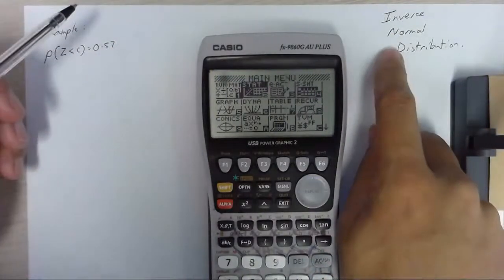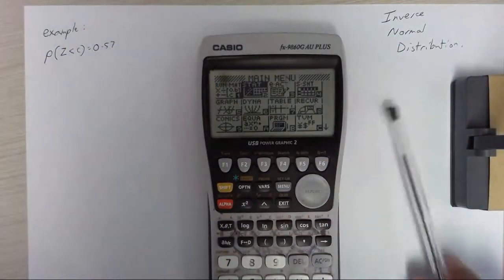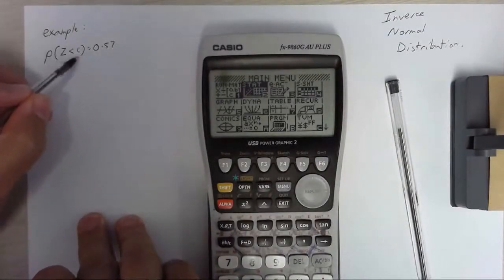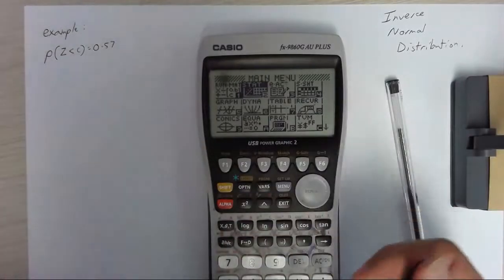What's about the inverse normal distribution? So basically it's where you know a probability but you don't know what number you need to be less than or greater than.